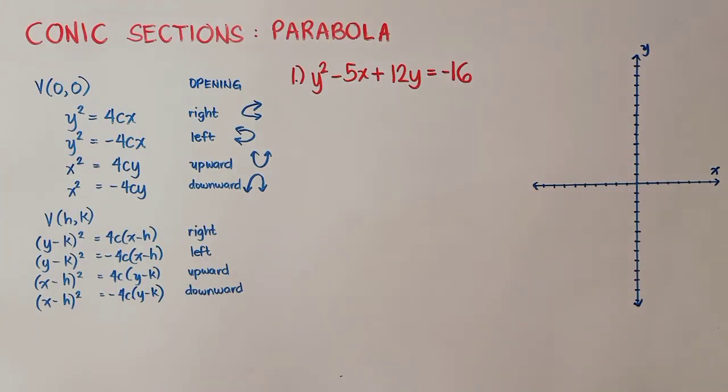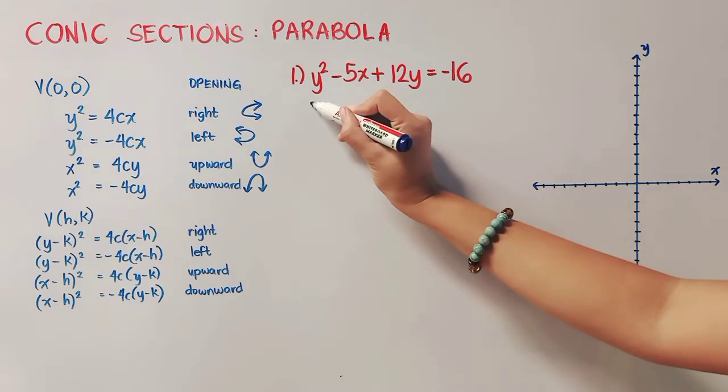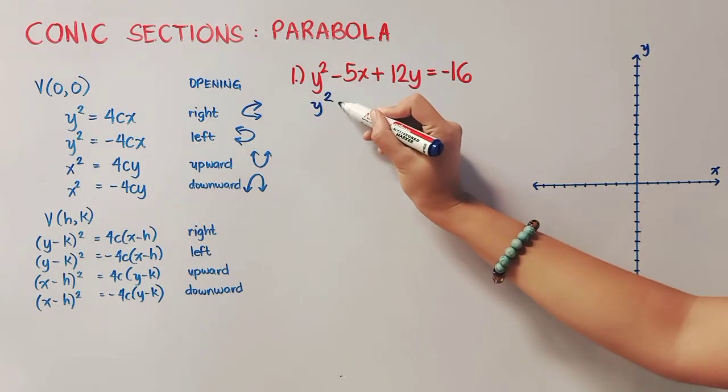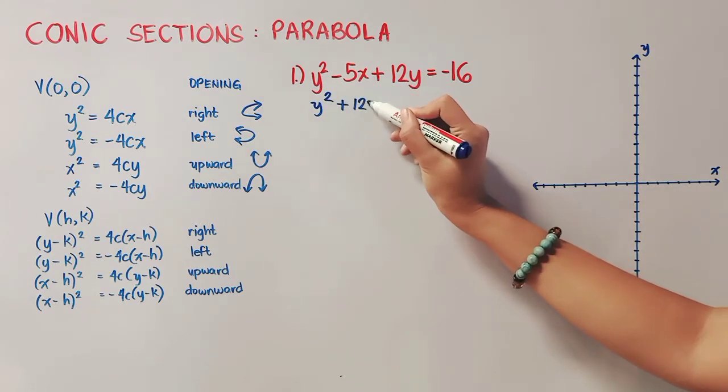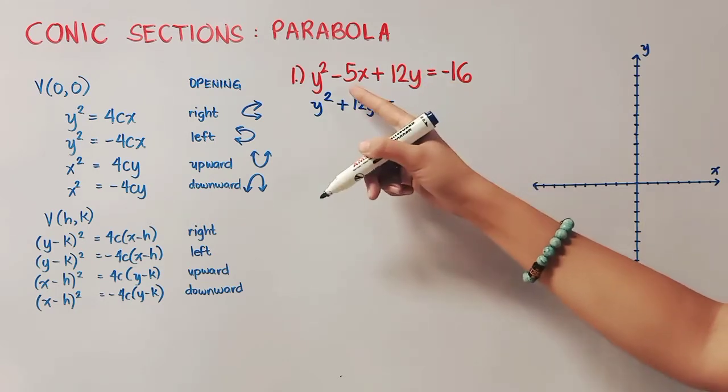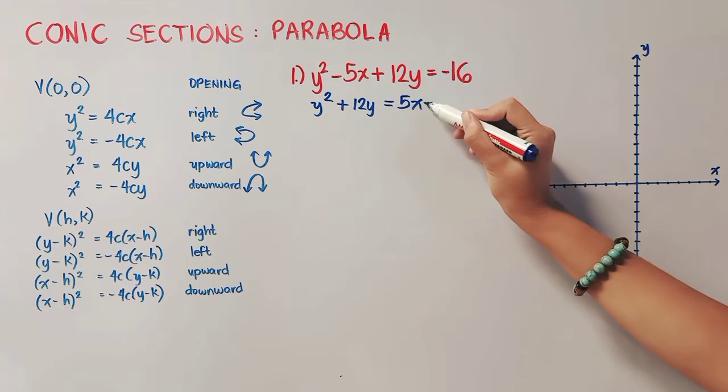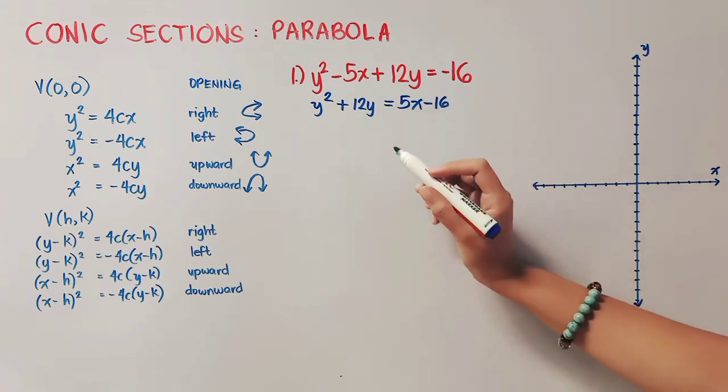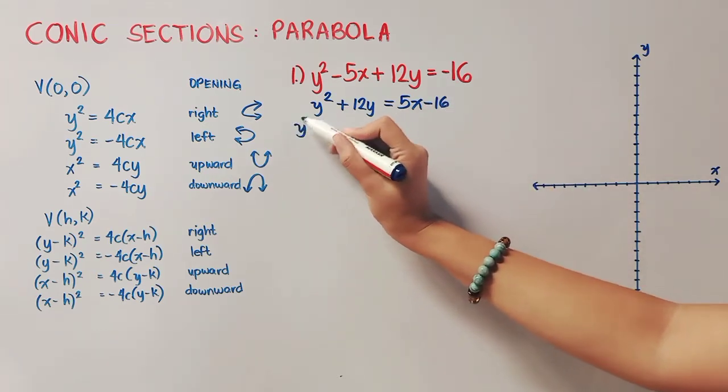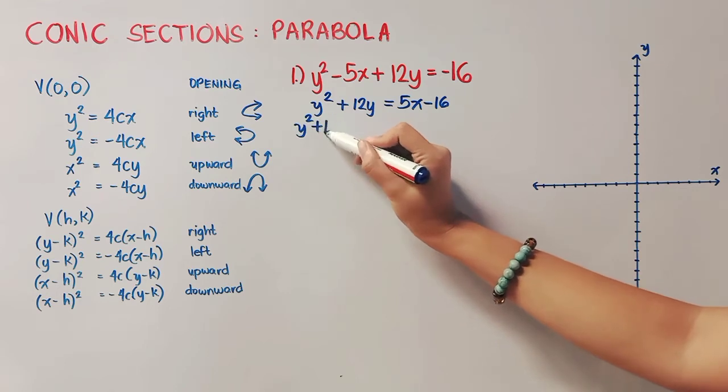We have here number 1. Notice that y is raised to 2. That means to say, all terms with variable y will be placed on the left side. That's y squared plus 12y is equal to the rest of the terms will be placed on the other side. So from negative 5x, it became positive 5x and we just copied negative 16.